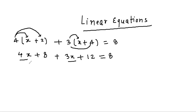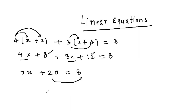Now 4x and 3x will become 7x, and 8 and 12 will become 20, equals 8. We can shift this 20 to the RHS, so we get 7x = 8 - 20.